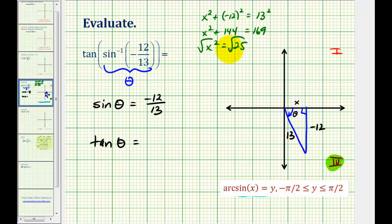And so x is equal to plus or minus five. But since we're in the fourth quadrant, the x coordinate would be positive. So this would be positive five. So now that we've modeled angle theta, we want to determine the tangent of angle theta to evaluate this expression.